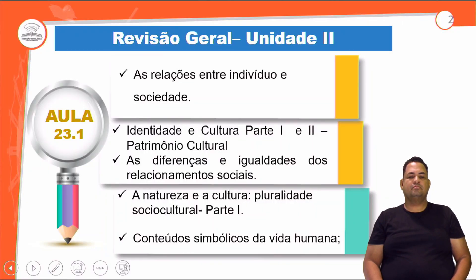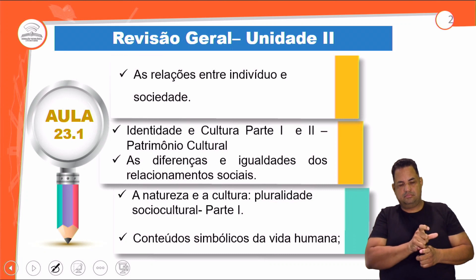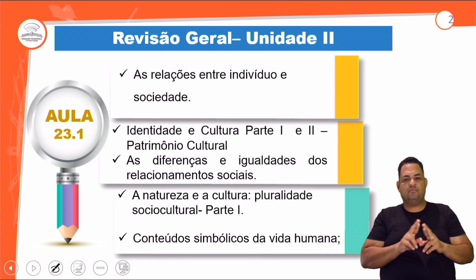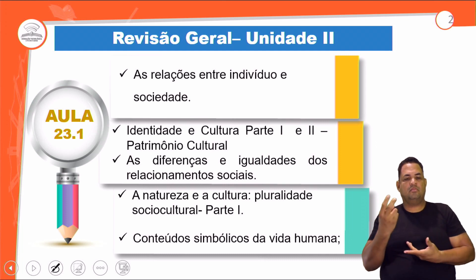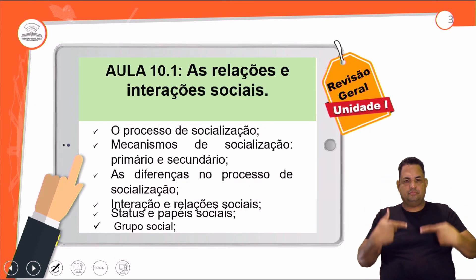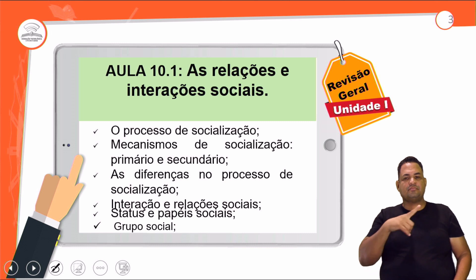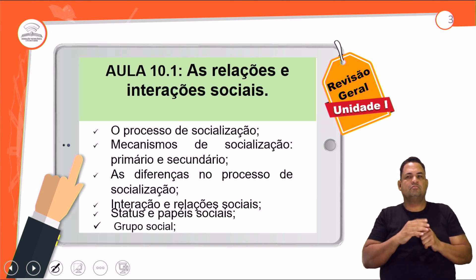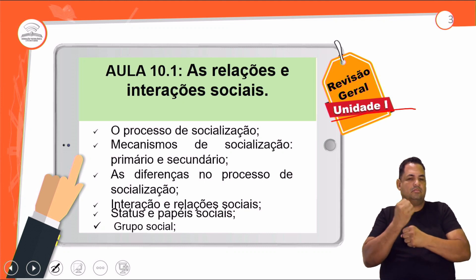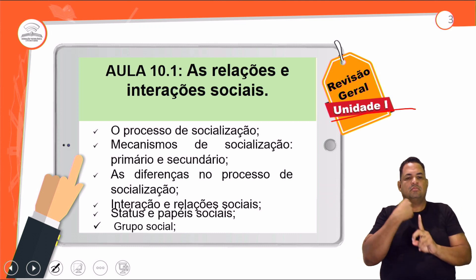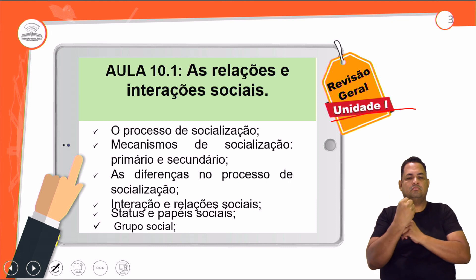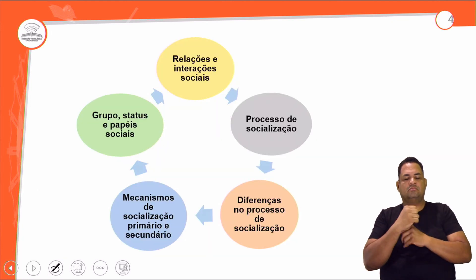Os conteúdos são: as relações entre indivíduos e sociedade, identidade e cultura parte 1 e 2, as diferenças e igualdade dos relacionamentos sociais, a natureza e cultura e conteúdos simbólicos da vida humana. Também tem uma aula a mais na unidade 2 — ela era da unidade 1 ano passado, mas veio para a unidade 2 — que é as relações e interações sociais, o processo de socialização, mecanismos de socialização, as diferenças no processo de socialização, grupo social, status e papéis sociais.